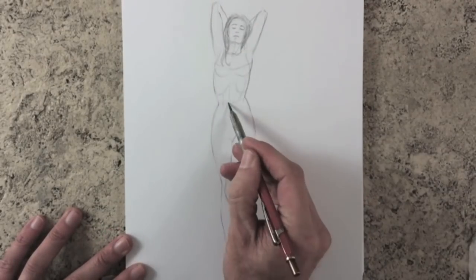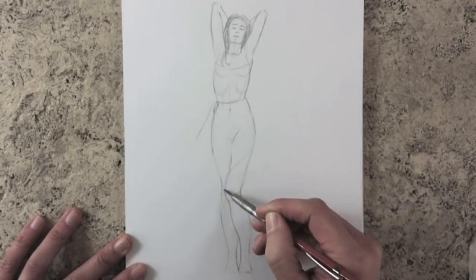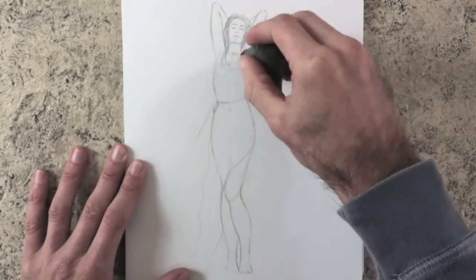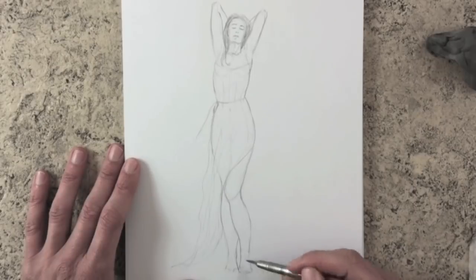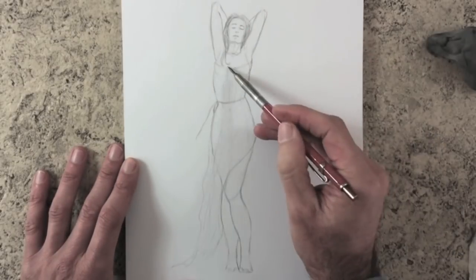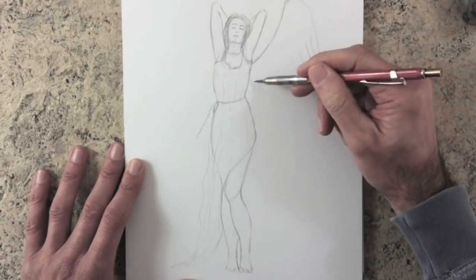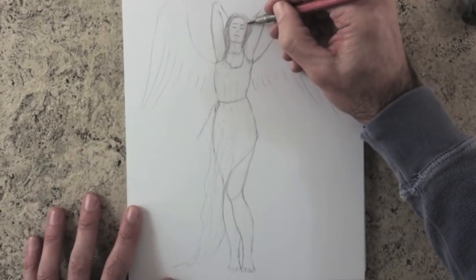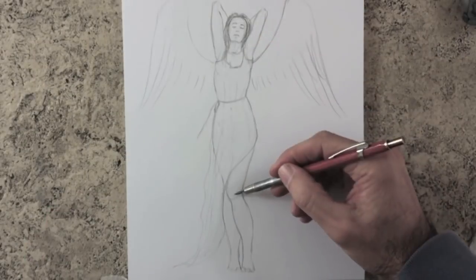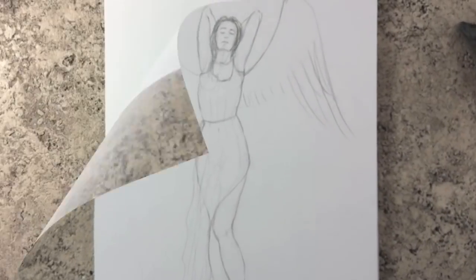And at the end, if we want to, we can draw some clothes. Since this is a drawing from the imagination, I am going to make some wings for her. Okay, good. Let's go to the next one.